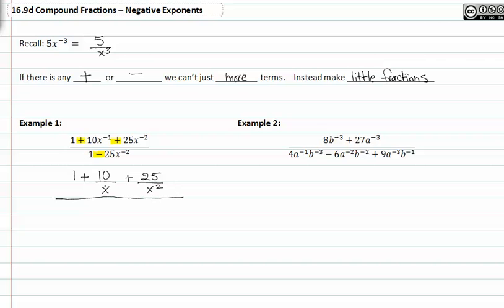In the denominator, I have one minus twenty-five x to the second, negative two. So I'll put twenty-five in the numerator and x squared in my denominator. From here, I need to figure out what my LCD will be.